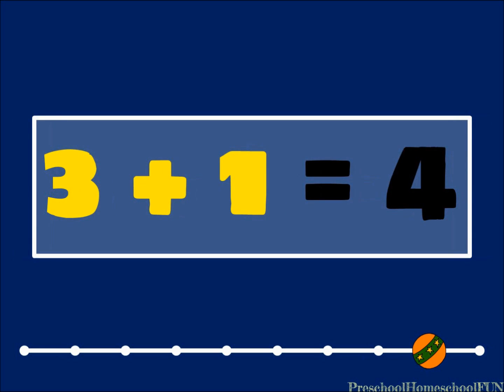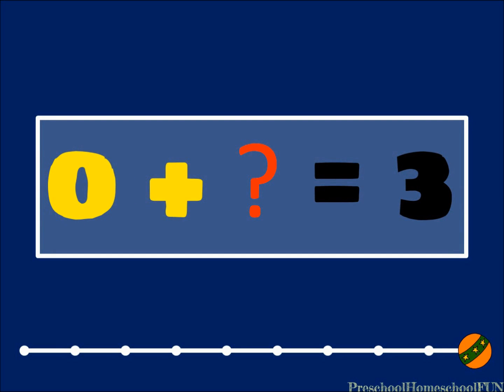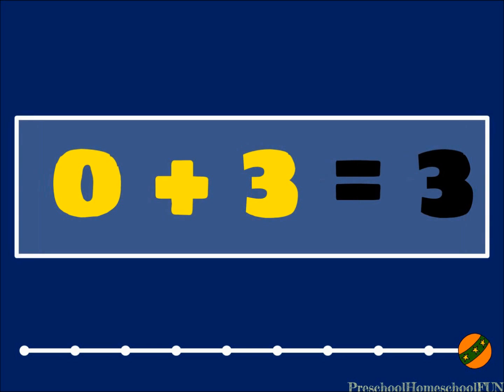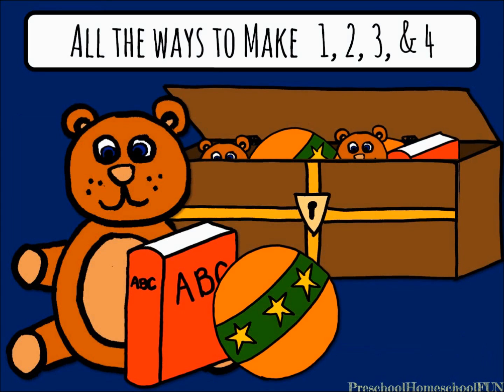One more question: 0 plus what equals 3? That's right, 0 plus 3 equals 3. You learned all the ways to make 1, 2, 3, and 4. What a great job you did!